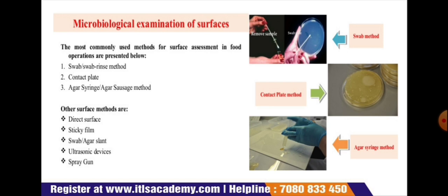An innovation in the swab rinse method presented by Kohler involves adding 1.5 ml of fluid to a flat surface, swabbing for 15 seconds over a two-centimeter area, and collecting a volume of 0.1 to 0.5 ml by micropipette. The fluid may be surface-plated or pour-plated using plate count or selective media. Various surfaces can be sampled using swabbing, including tube surfaces and petri plate surfaces.